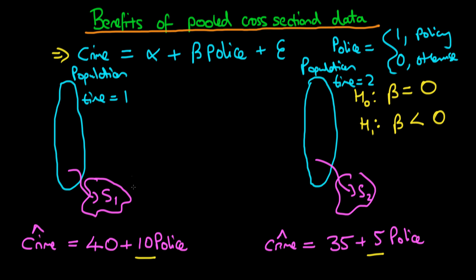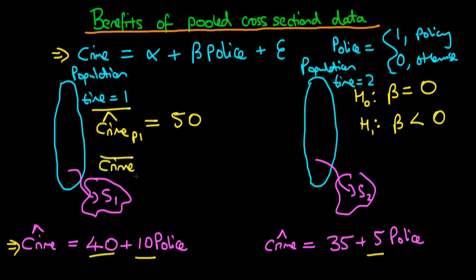To quantify this, we use our estimated model to calculate the average crime rate of cities at time period 1 who did introduce this policing policy. Using this model, we find it is going to be 50 — 40 from the constant plus 10 times 1, because the W variable takes on the value of 1 if the city did introduce this policing policy. The average crime rate for those cities which didn't introduce the policy at time period 1 is just 40.